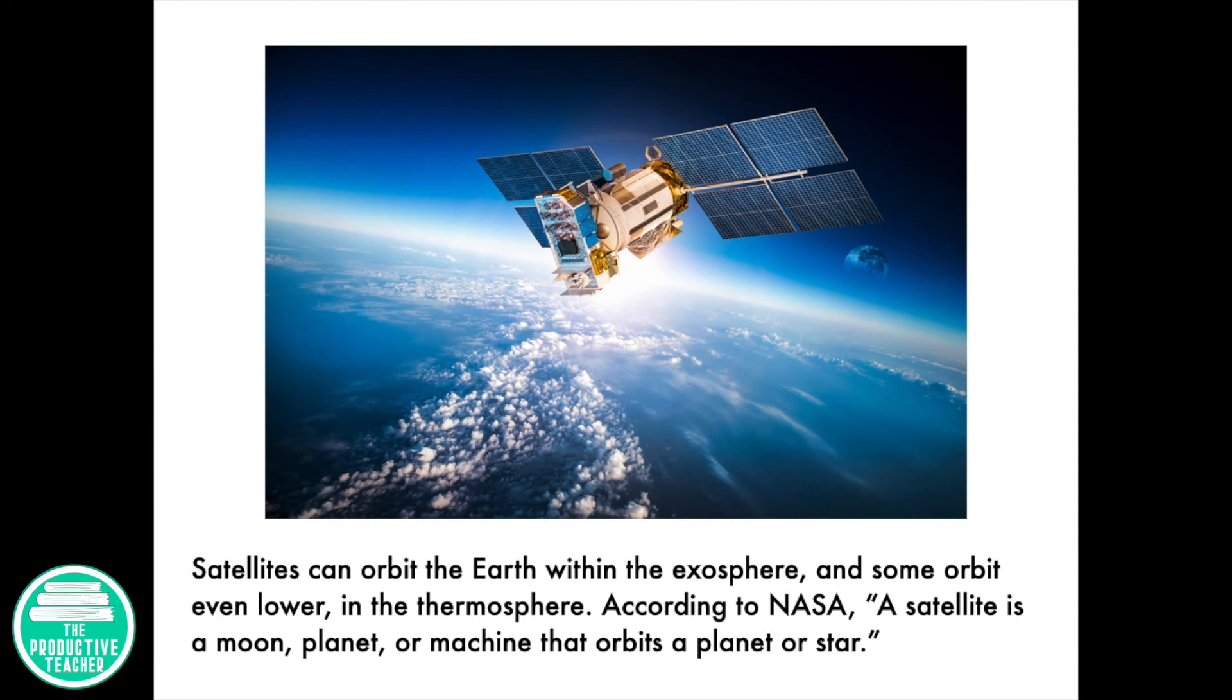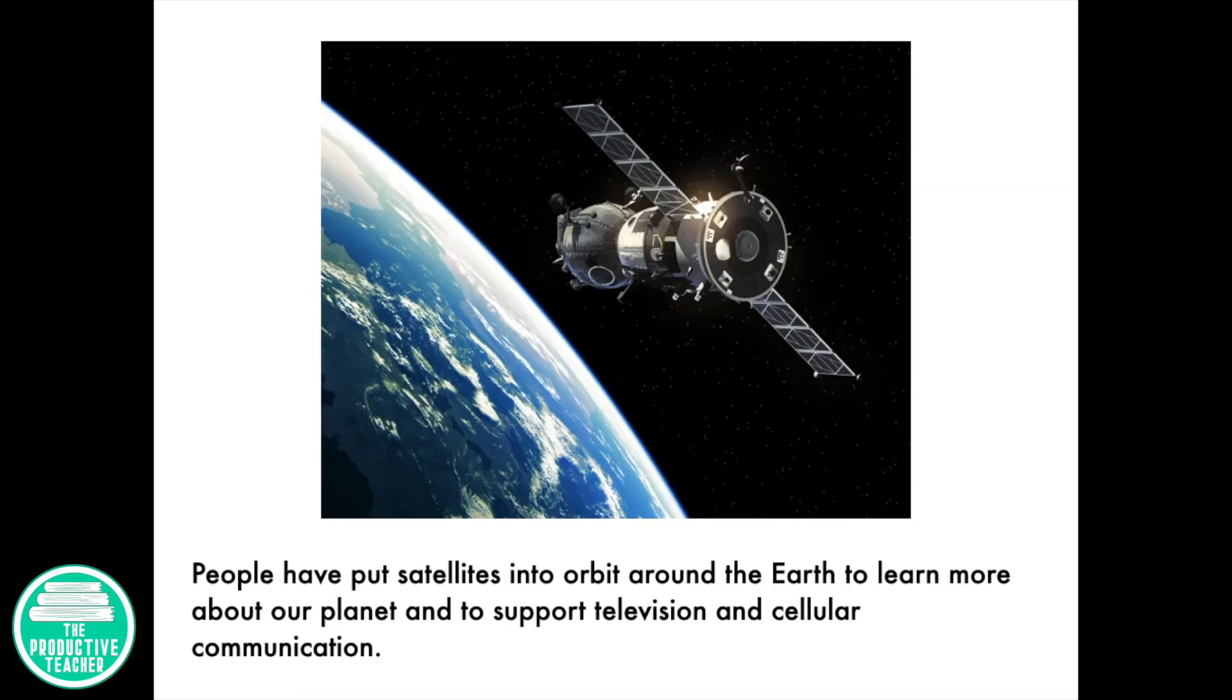Satellites can orbit the Earth within the exosphere, and some orbit even lower in the thermosphere. According to NASA, a satellite is a moon, planet, or machine that orbits a planet or star. People have put satellites into orbit around the Earth to learn more about our planet, and to support television and cellular communication.